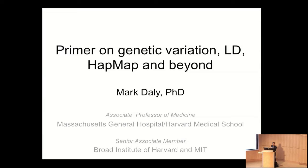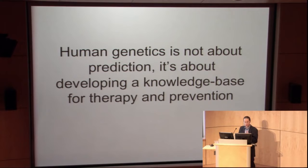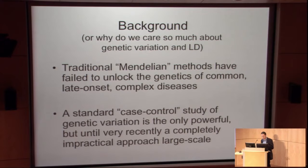And then I'll give a retrospective over the last decade of progress in the HapMap project and related projects for creating resources that we really fundamentally lacked in human genetics 10 years ago. So human genetics is, of course, not really about prediction of risk, although in some cases that's a nice outcome. It's really much more about developing a knowledge base for therapy and prevention in the future.